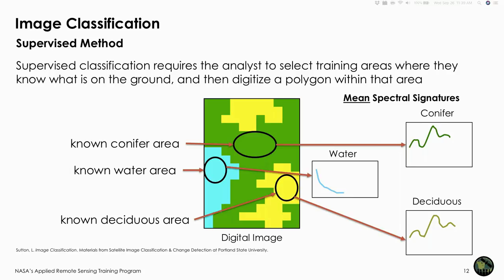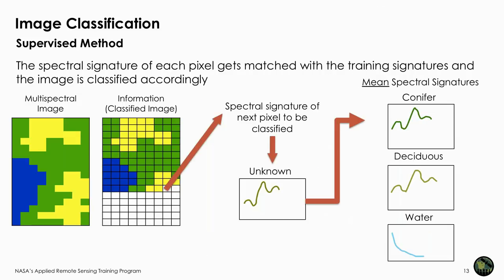Each material has a spectral signature. For example, water generally has a low reflectance, slightly higher in the blue portion, but then declines. Conversely, coniferous and deciduous forests have peak and valley reflectances which we can exploit when classifying imagery. With this information, one is able to build a training dataset of mean spectral signatures for the various classes of interest, and the classification algorithm uses this to identify the best match or class for each pixel.